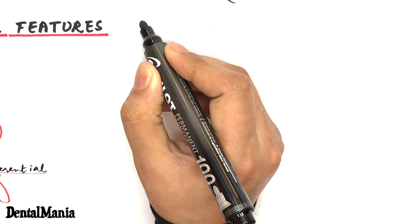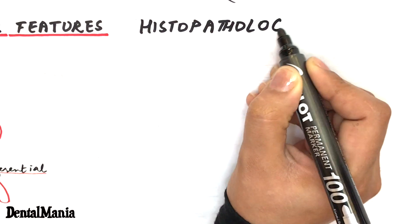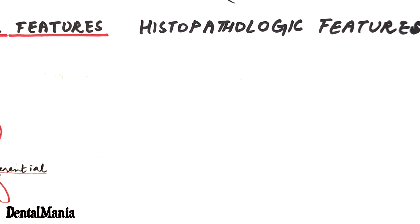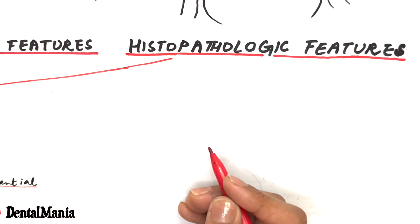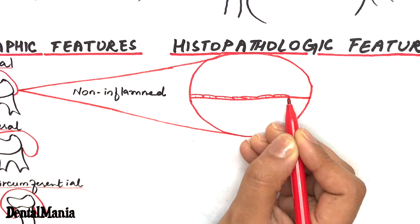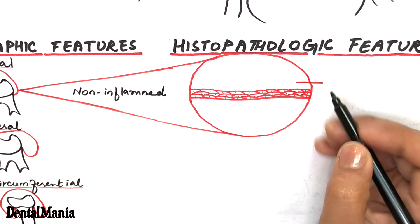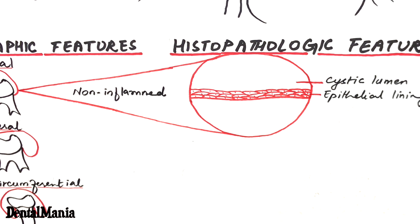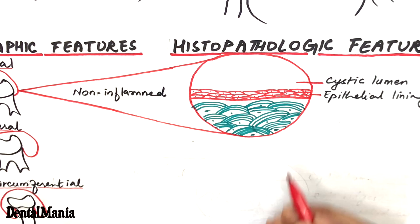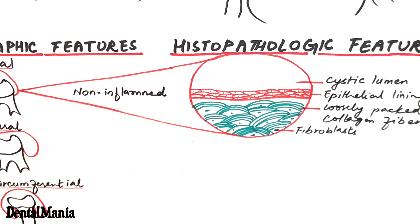The histopathologic features of the dentigerous cyst vary depending on whether the cyst is inflamed or not. In the non-inflamed type, seen mostly in the central or circumferential variant, the epithelial lining is about 2 to 4 cell layers thick. The connective tissue fibrous wall has loosely packed collagen fibers, and the epithelium-connective tissue interface is flat.